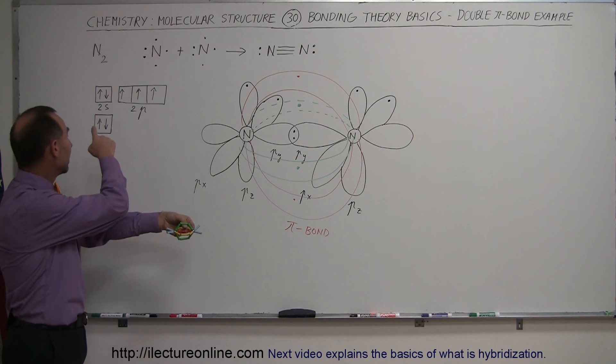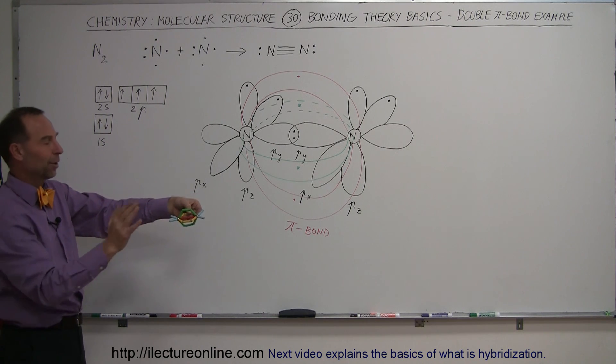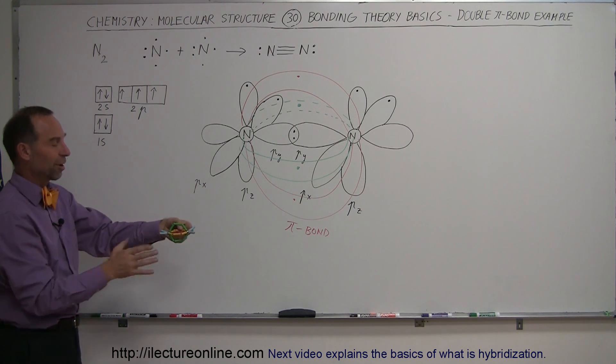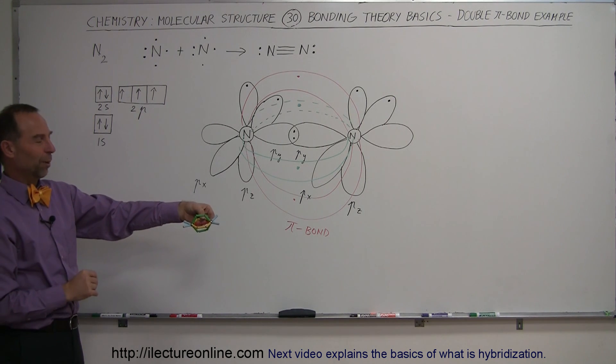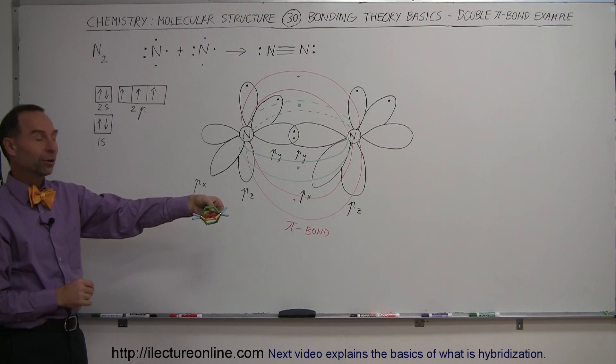Those would then, of course, be located in the 2s orbital. We're ignoring the 1s orbital electrons because they're down below at a low energy level, which cannot be seen from this perspective. So there you go - that's what we call a double pi bond.